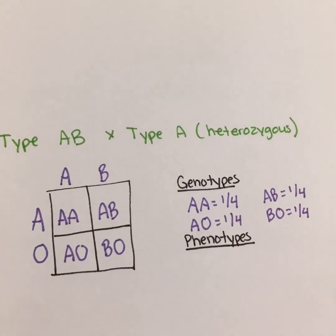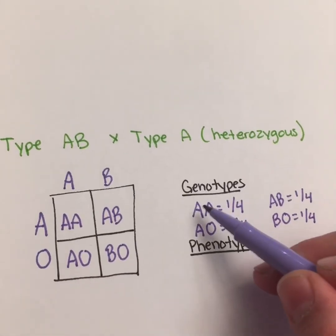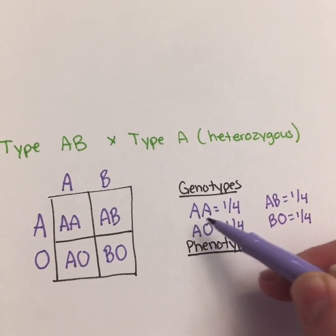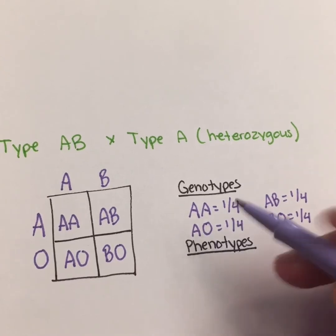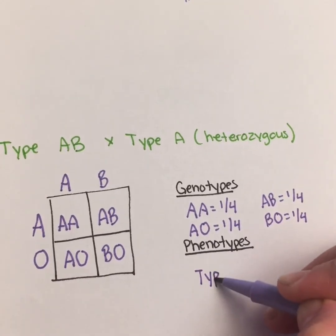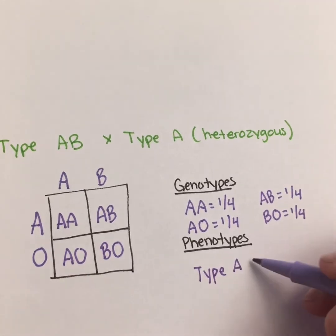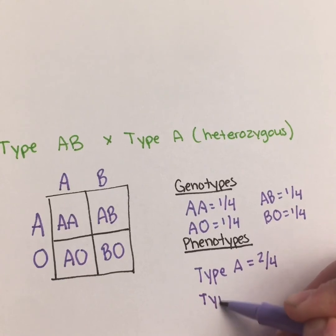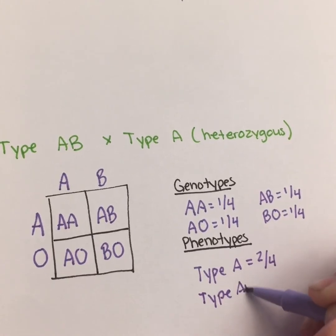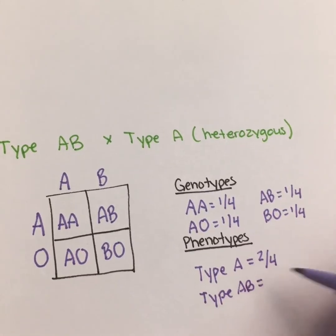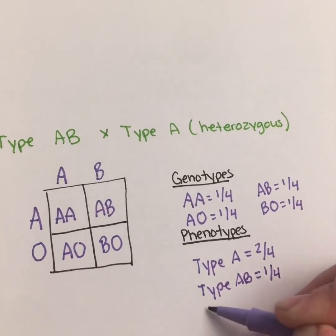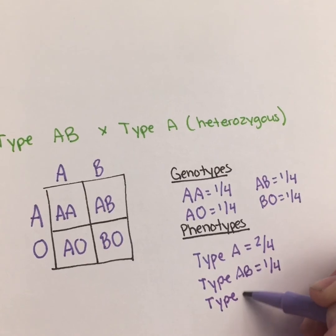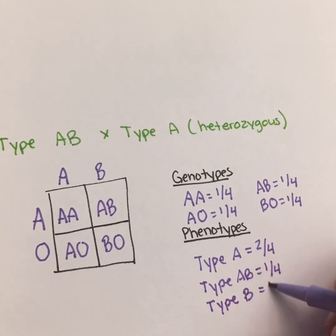Let's put this into phenotypes. AA and AO will both have type A blood — homozygous and heterozygous — because A is dominant to O. So for type A blood that phenotype is two out of four. We have a possibility for type AB blood — one out of four. And we also have a possibility for type B blood, because B is dominant over O — one out of four.